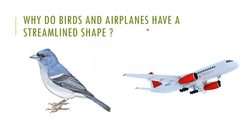Why do birds and airplanes have a streamlined shape? Aeroplanes and birds both fly in the air and have to face friction exerted by air. They are shaped so that they do not lose energy while overcoming the frictional force exerted by air. Therefore, airplanes and birds are shaped streamlined so that they can overcome the frictional force of air.